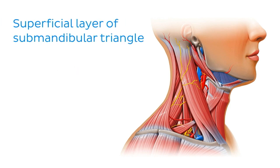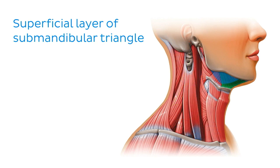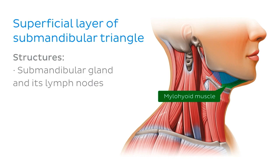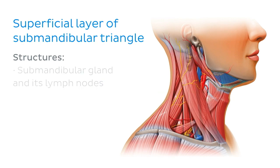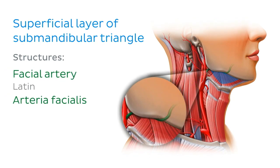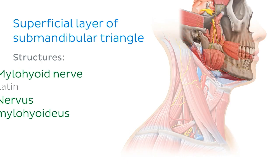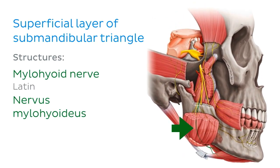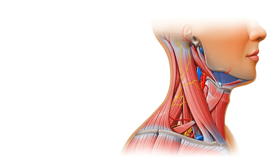The submandibular triangle contains many structures, therefore making it an important anatomical location. The mylohyoid muscle divides the submandibular triangle into a superficial and deep compartment. In the superficial layer, you'll find the submandibular gland and its lymph nodes. The facial artery, with its corresponding vein, runs through the gland and gives off a branch called the submental artery, which supplies the chin area together with the submental vein. The mylohyoid nerve, which arises from the mandibular branch of the trigeminal nerve, innervates the mylohyoid muscle and the anterior belly of the digastric muscle, and can also be found in the submandibular triangle.